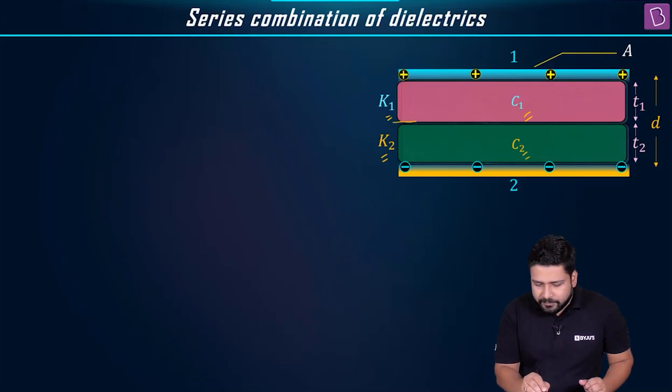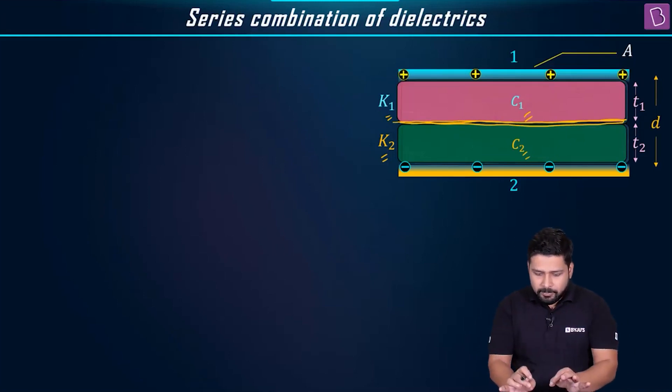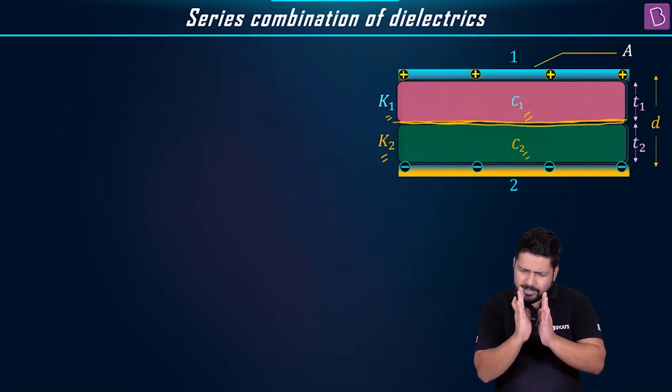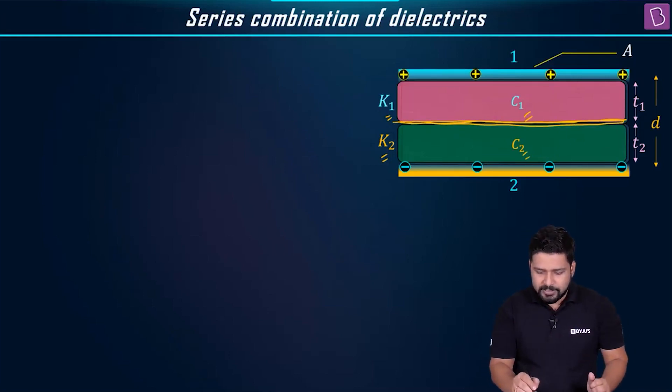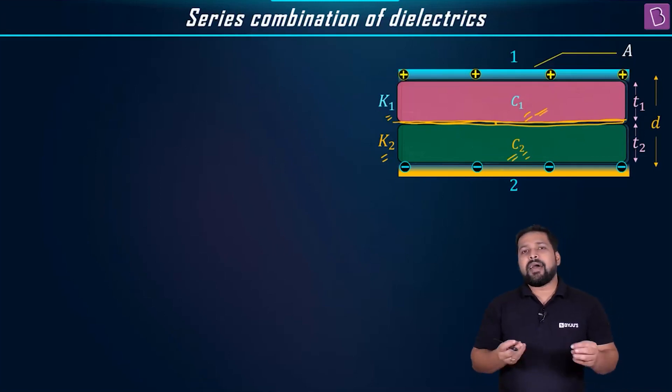I'll call this as my first capacitor, because I can imagine a metallic plate over there, a very thin metallic plate. That makes my first capacitor and this will become my second capacitor, and I am calling the value of the capacitances as c1 and c2.